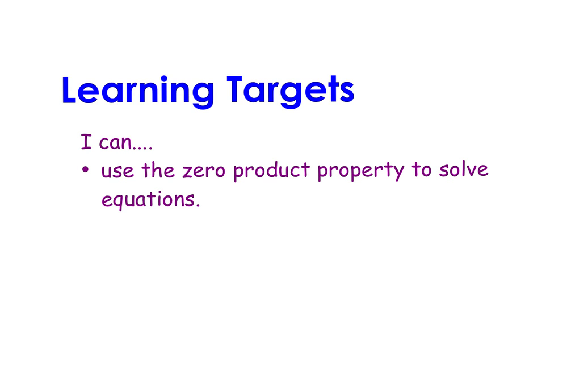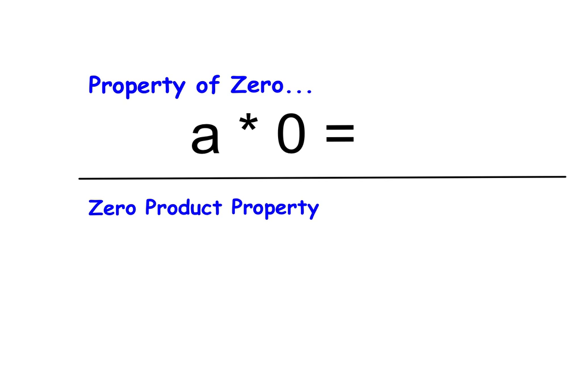In this video, we're going to be using the zero product property to help us solve polynomial equations, and we'll specifically be using it with our knowledge of the greatest common factor. Before we use this to solve, let's talk about the property of zero. What we should know is that any number — represented by A here — times zero is equal to zero. The only way to get a product of zero is for zero to be involved in that multiplication problem.